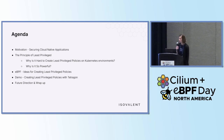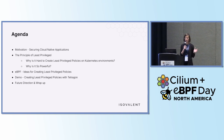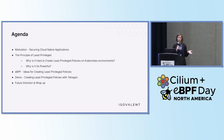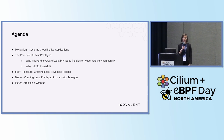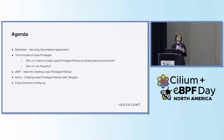A little bit about the agenda. I will talk first about the motivation — what was the main purpose behind this talk, which is securing cloud-native applications. Then we will move into the principle of least-privileged: why it's so hard to create least-privileged policies in a Kubernetes environment, and why it's so powerful if you actually achieve that. Then John will talk about eBPF and some ideas for how one could create least-privileged policies. And then at the end, we will do a little demo.